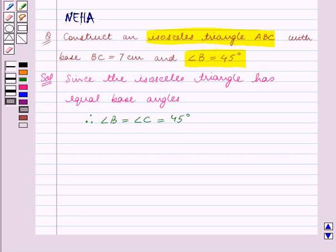We have to construct a triangle in which the length of one of the sides is given and two base angles are known to us. We shall now write down the steps of construction.